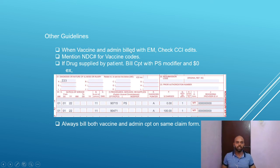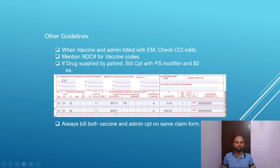When vaccine and admin are billed with an E&M visit, check CCI edits and add the appropriate modifier 25 with the E&M visit. Always mention the NDC number for all vaccine codes in order to avoid NDC denials. If the drug is supplied by the patient, bill the CPT with the PS modifier and bill a $0 value, then bill the administration code. Always bill both the vaccine and administration on the same claim form in order to avoid unnecessary denials.